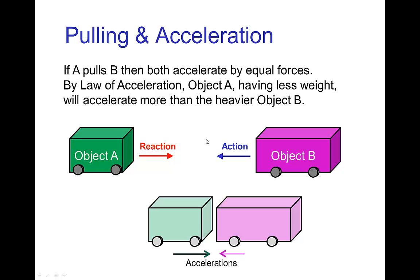So here's another picture of that. Let's say object A and object B have some kind of attraction, maybe like a magnet. In that case the action and reaction forces will be equal as they are pulled towards each other. But if object B is heavier, it accelerates less and will move less distance. Object A accelerates more, so it will move a farther distance.